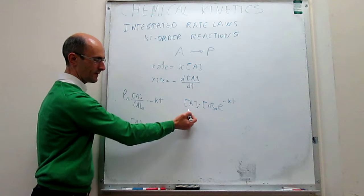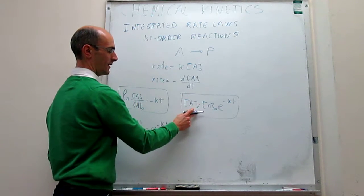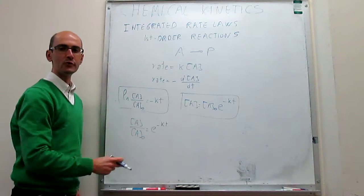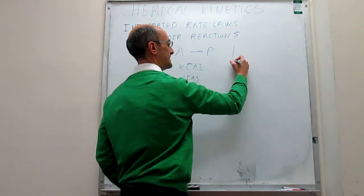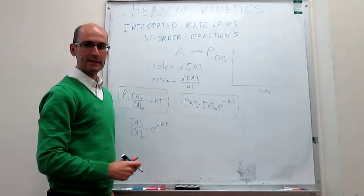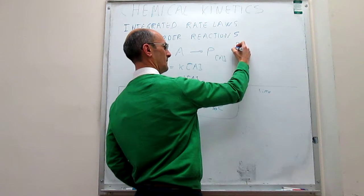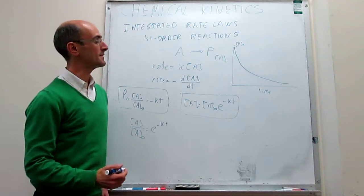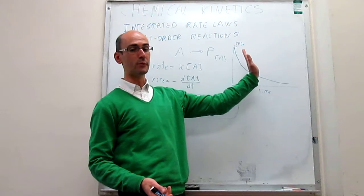Now we do have an explicit dependence of the concentration of A as a function of time. These two expressions are exactly identical. The exponential form is a little simpler to understand — it gives you the dependence of the concentration as a function of time and it's easier to compare to other orders. When you plot this, the concentration of A as a function of time shows an exponential decay. When time is zero, you have the concentration A-naught, but then after the reaction starts, the concentration falls in an exponential manner. This is different from a zero-order reaction, where the variation of concentration with time would be perfectly linear, not exponential.